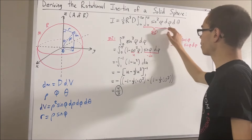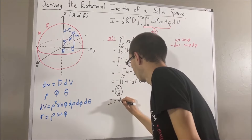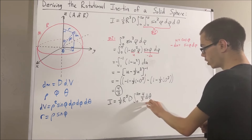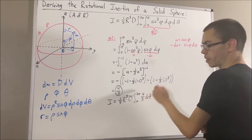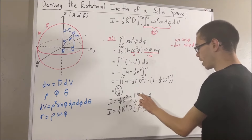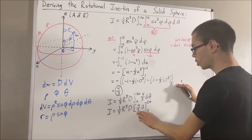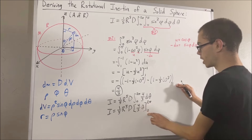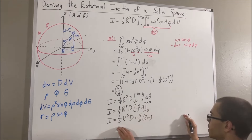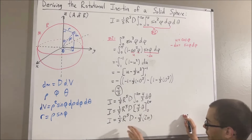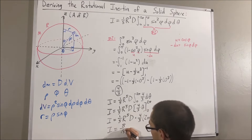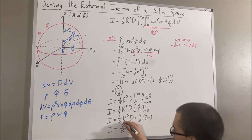Now all we have to do is evaluate the theta integral. The integral of four-thirds d theta is four-thirds theta, and our bounds go from zero to 2 pi. That gives us four-thirds times 2 pi minus four-thirds times zero, which is just four-thirds times 2 pi. Combining everything, we have four times two giving us eight, and five times three giving us fifteen, so we get eight-fifteenths pi R to the fifth times density.